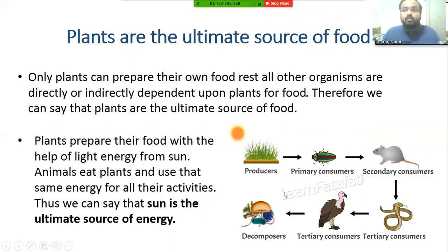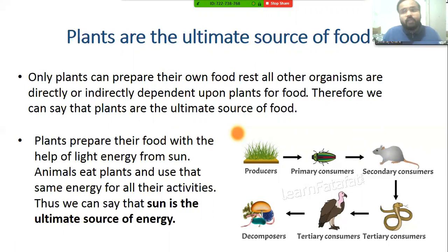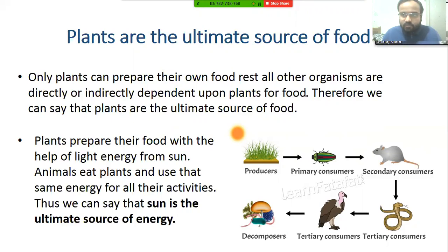In all food chains, plants are the ultimate source of energy or food. Plants perform photosynthesis with the help of sunlight. If the sun's energy were not there, photosynthesis would not occur. So we can say that sunlight is the ultimate source of energy. Plants prepare their food with light energy from the sun, animals eat plants and use that same energy for their activities, making the sun the ultimate source of energy on this earth.